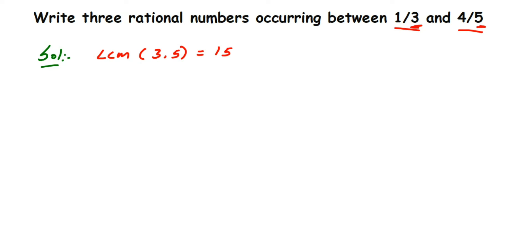For one by three, we need to find the equivalent rational number with denominator fifteen. To get fifteen, we multiply three by five. So we multiply five in both the numerator and denominator: one multiplied by five gives five, and three multiplied by five gives fifteen — so one by three becomes five by fifteen.